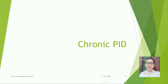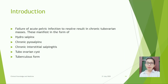Now let's learn about chronic PID. Introduction: failure of acute pelvic infection to resolve results in chronic tubo-ovarian masses. This manifests in the form of hydrosalpinx, chronic interstitial salpingitis, tubo-ovarian cysts, and tuberculosis form.